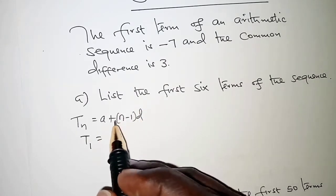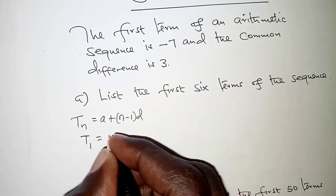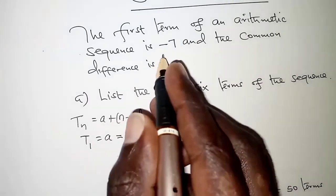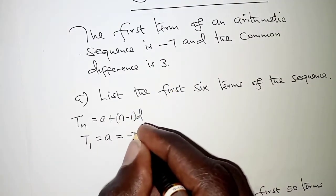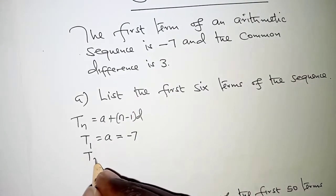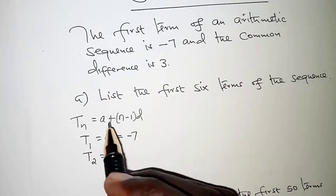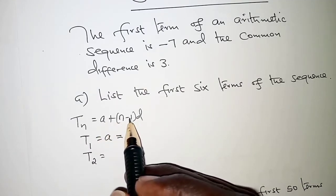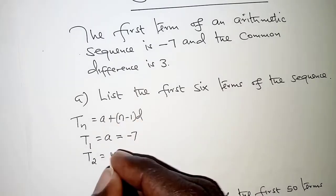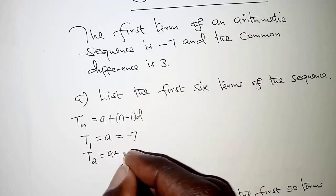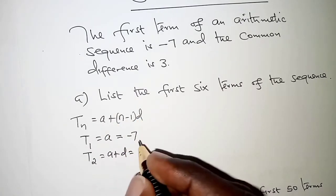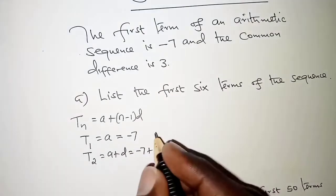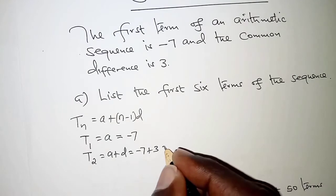This becomes 0, so we have a for the first term, and we are already told that is negative 7. Now if n is 2, that is the second term, we have a plus 2 minus 1, that is 1d, which becomes a plus d. That is negative 7 plus the common difference, which is 3, so that is negative 4.